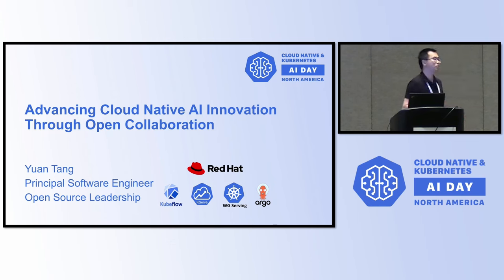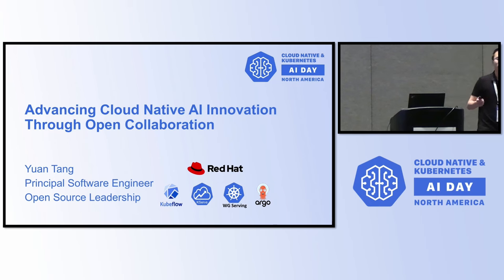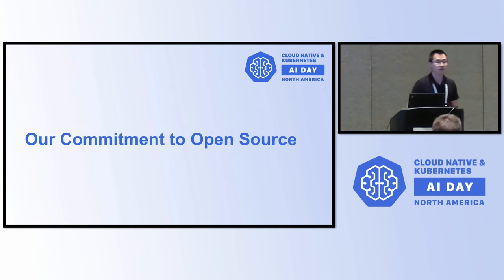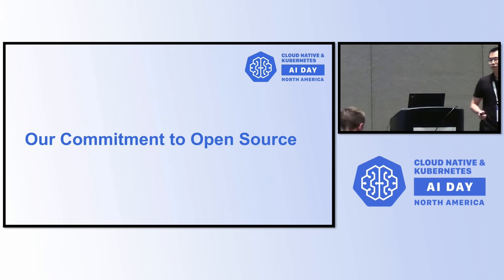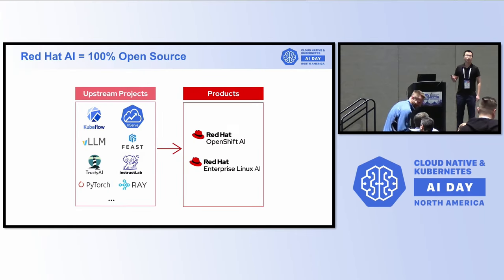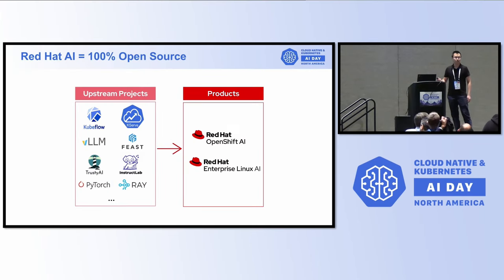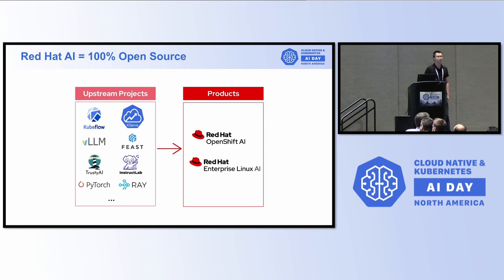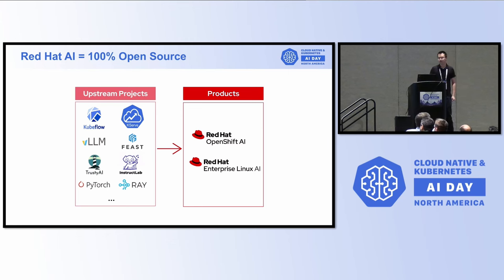I'll showcase some of our community-driven efforts and share how we collaborate in the open ecosystem. First, what's our commitment to open source? Red Hat AI is 100% open source. We use, contribute, and maintain the tools that we depend on. We build our core AI products, Red Hat OpenShift AI and Red Hat Enterprise Linux AI, using 100% open source tooling.